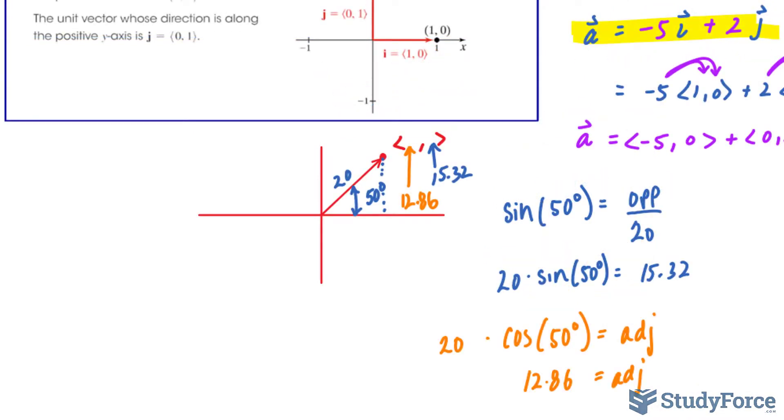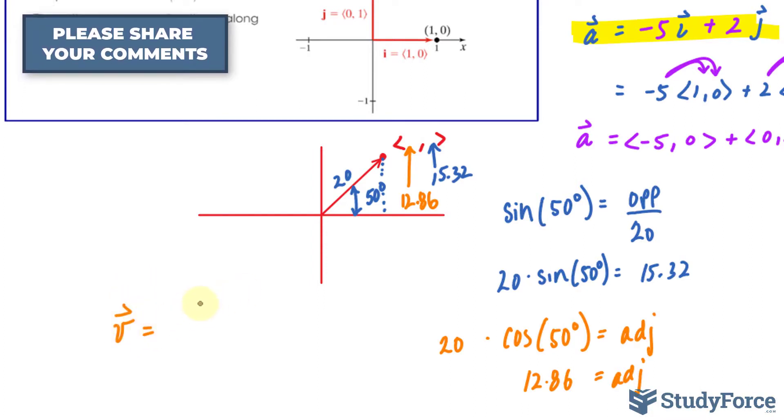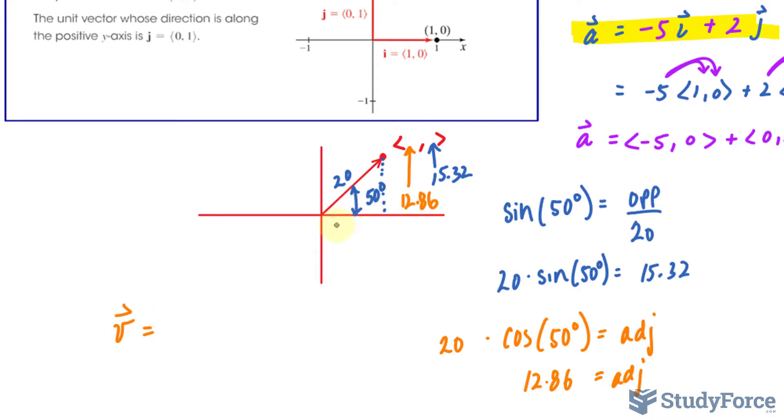So if we want to write this out in terms of i and j, we write down v, the vector: along the horizontal is 12.86i, plus along the vertical, we found it to be 15.32j.